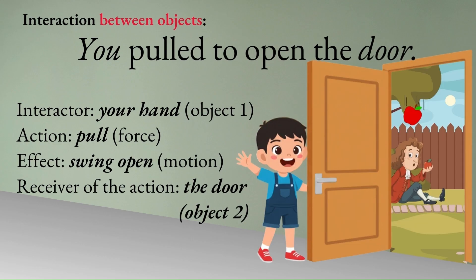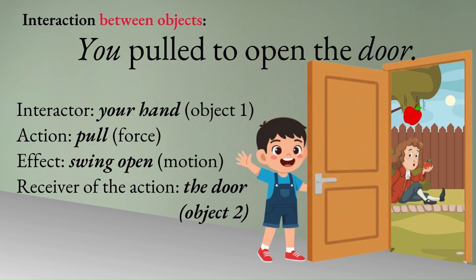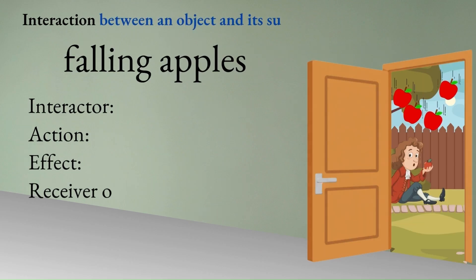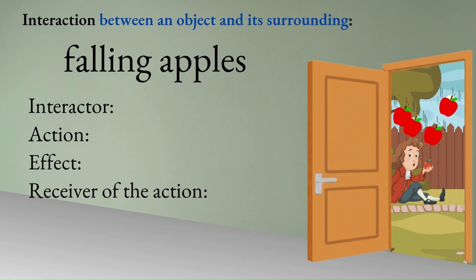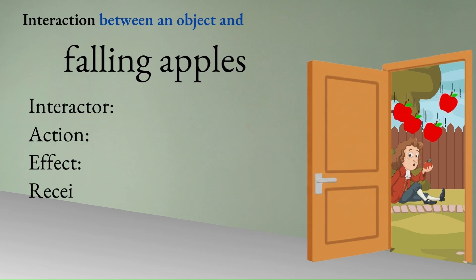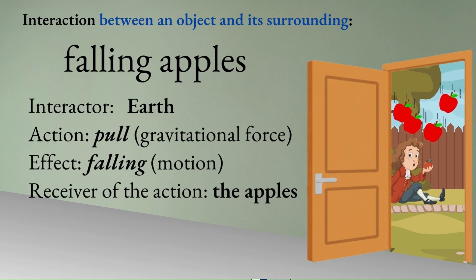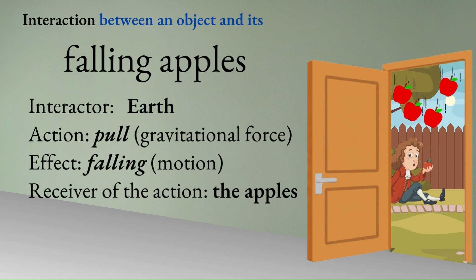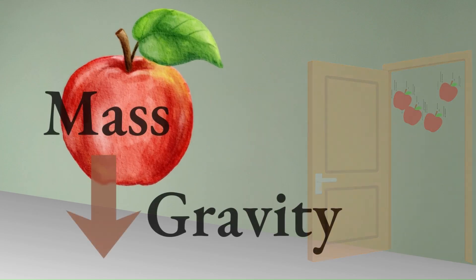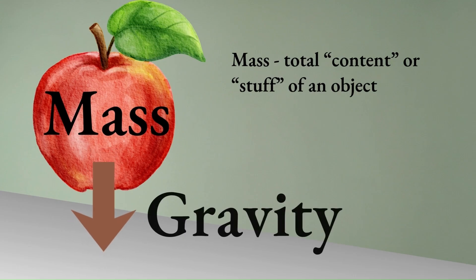The effect of the exerted force is the motion of the door, because it will swing open. And the receiver of the force is, of course, the door. Now, how about in the situation where an object interacts with its surroundings, like the falling apple? What's the interactor here? Correct — it's the earth. The action is a gravitational pull downward. The receiver is the apple. The apple has mass because it's made of matter. When gravity pulls that mass, we call that force weight.